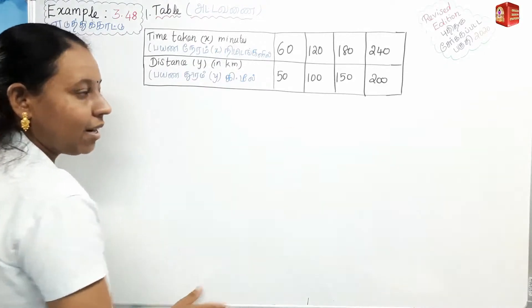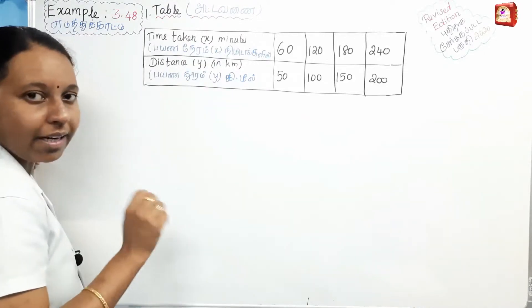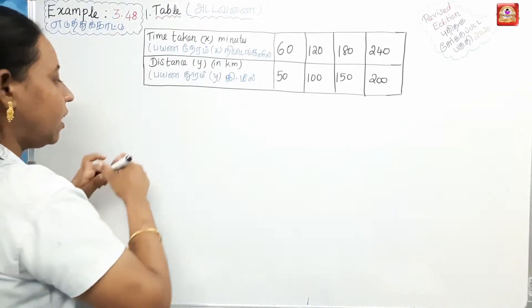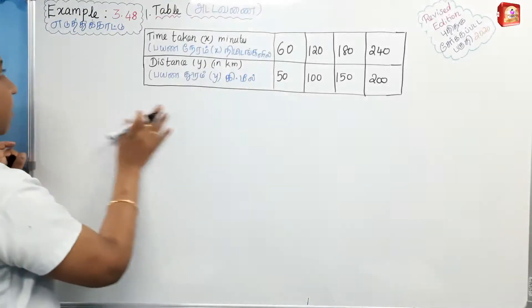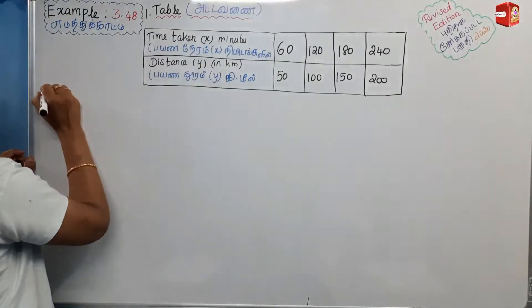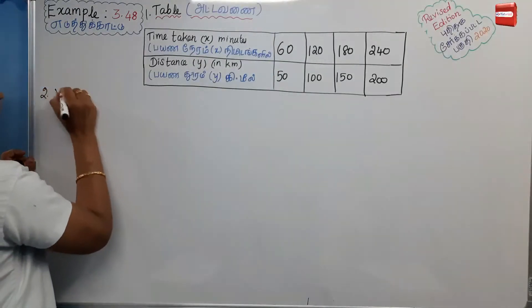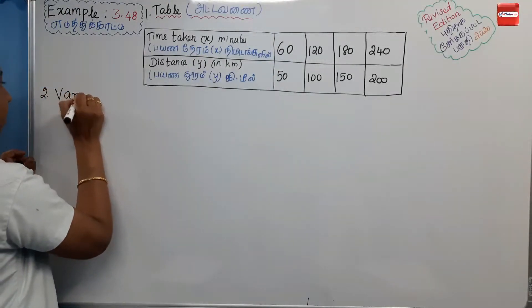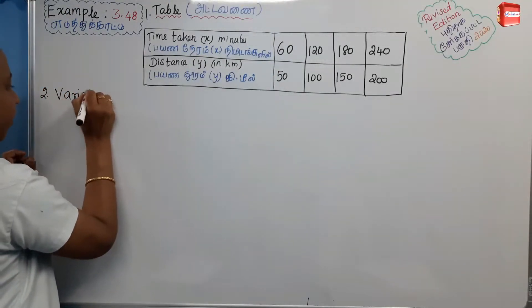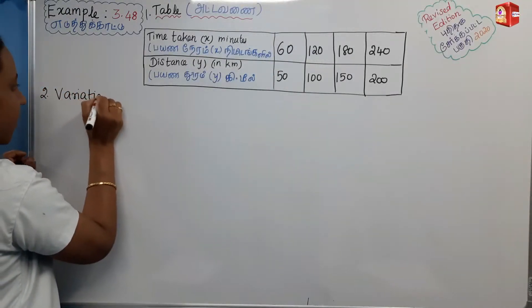We can plot the graph. Let's look at the second step — the variation. What is the variation? As X increases, Y also increases.